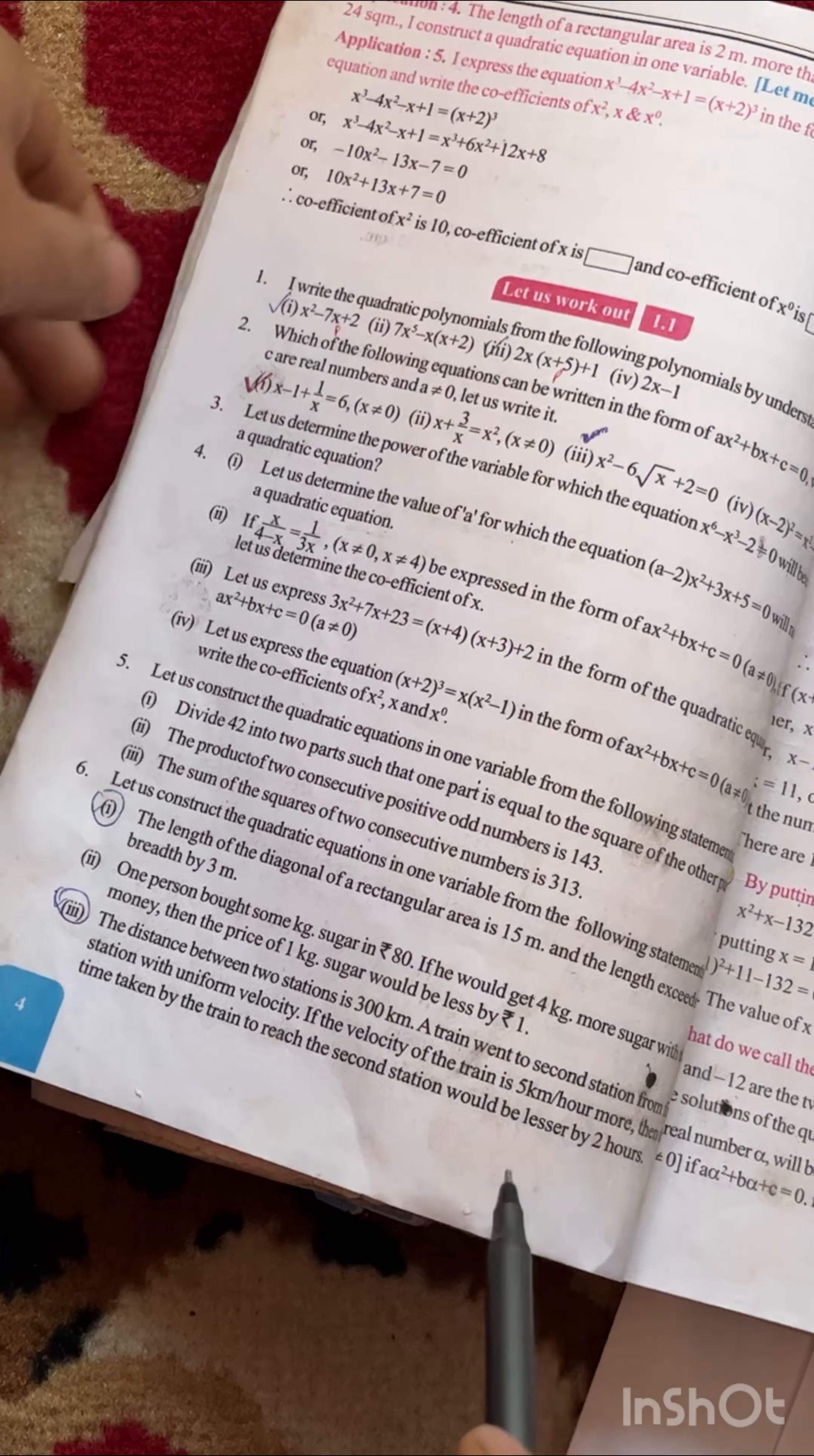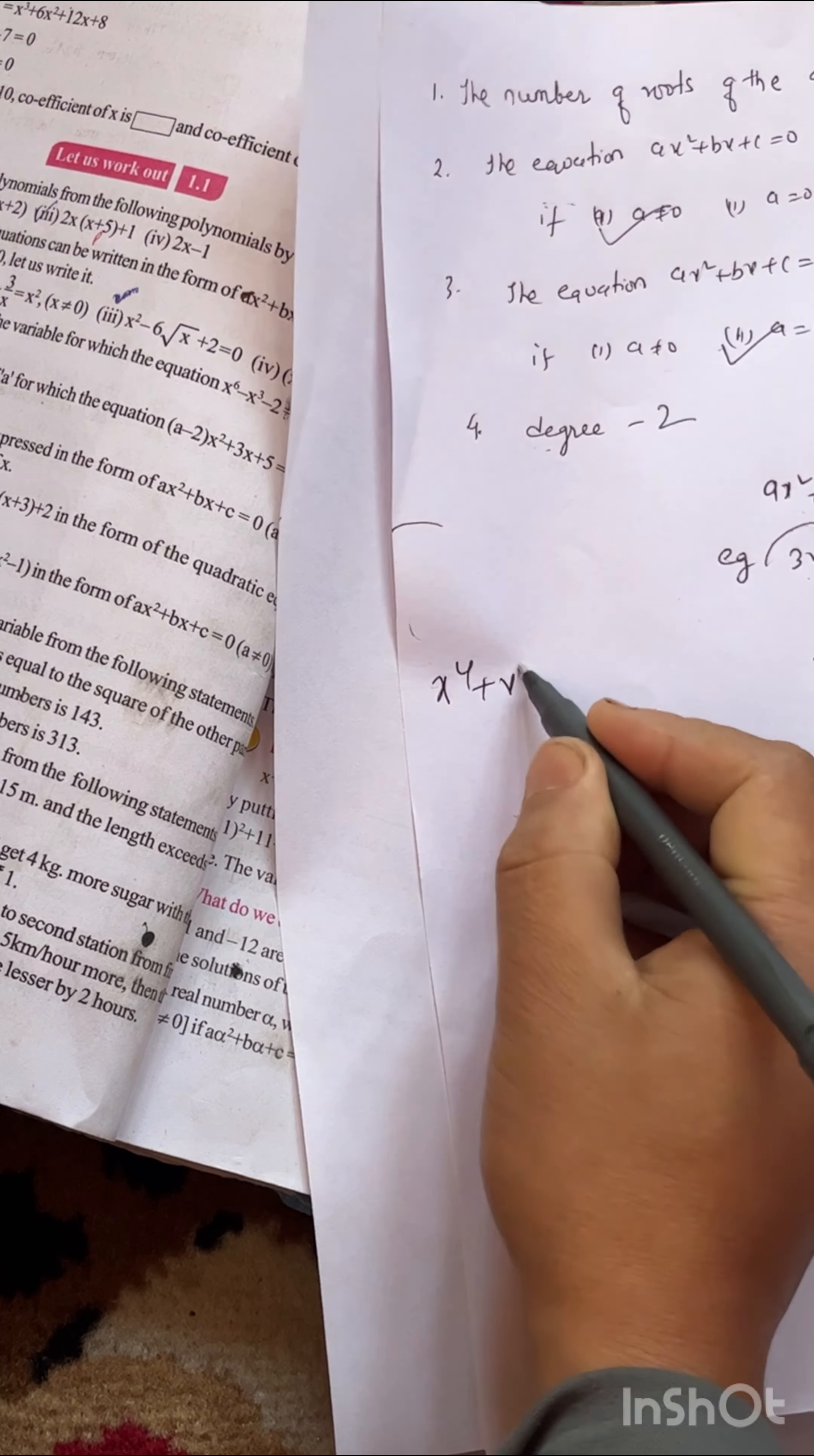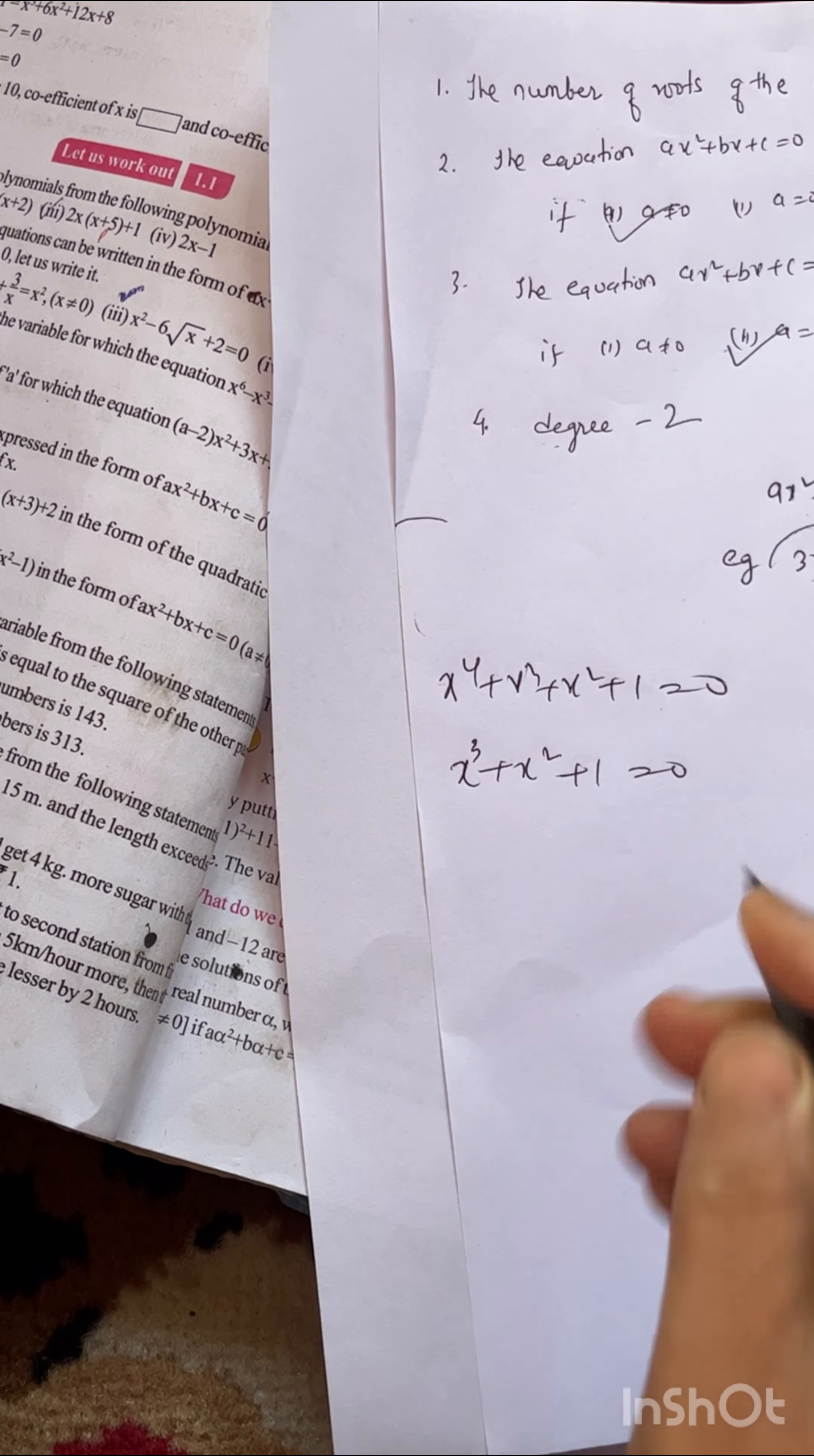Question 1: Write the quadratic polynomials from the following polynomials. What is a polynomial? An equation like x² + 3x + 1 is a polynomial. We need to decide which polynomials are quadratic.